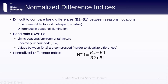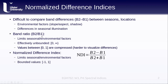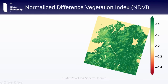To help fix this, we can combine the best of both techniques in something called a normalized difference index, where we take band 2 minus band 1 divided by the sum of band 2 and band 1. This limits seasonal and environmental factors as with band ratios, but also gives us bounded values — no less than -1 or greater than 1 — and it is centered on 0, so we can easily distinguish between positive and negative differences.